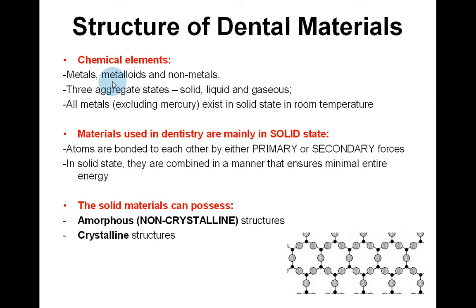When considering the structure of dental materials, you must first look at the chemical elements — metals, metalloids, and non-metals. There are three aggregate states: solid, liquid, and gaseous. All metals, excluding mercury, exist in solid state at room temperature. The materials used in dentistry are mainly in solid state, where atoms are bonded by primary or secondary forces in a manner that ensures minimal energy. Solid materials can possess amorphous (non-crystalline) or crystalline structures.